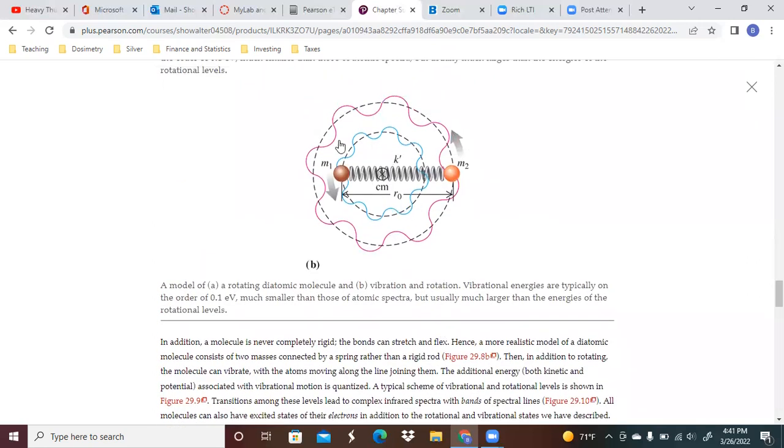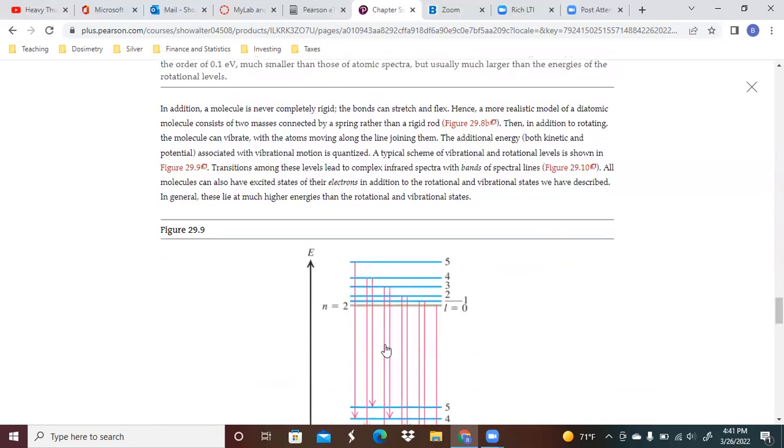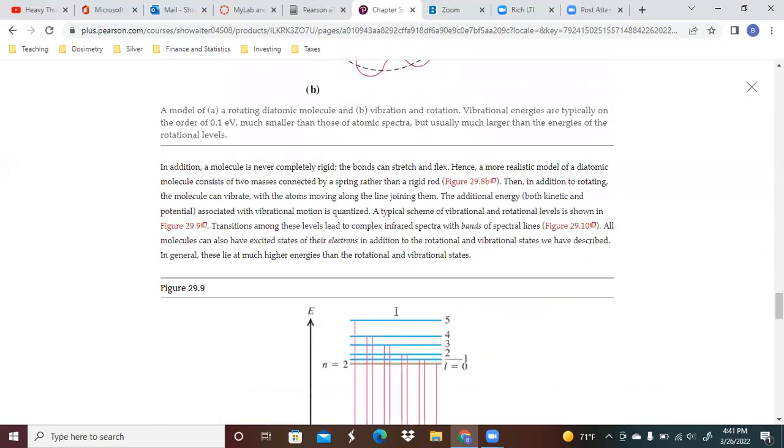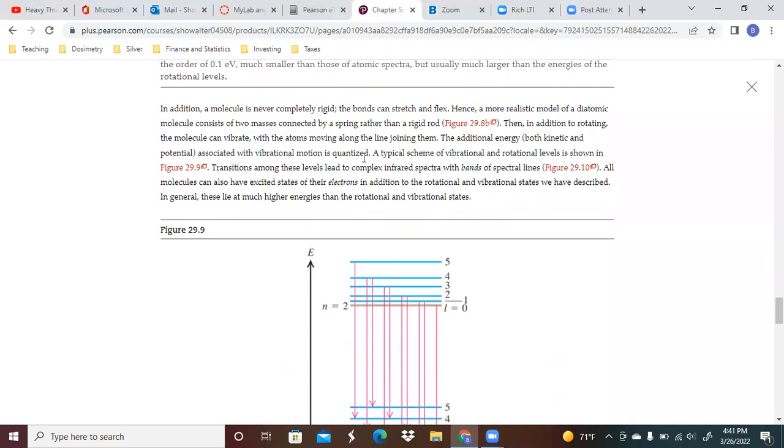You've also got vibrational energies going on as well. A molecule is never completely rigid. A bond can stretch and flex. Hence, a more realistic model of a diatomic molecule consists of two masses connected by a spring rather than a rigid rod, which is what this is trying to exemplify. Transitions among these levels lead to complex infrared spectra with bands of spectral lines.